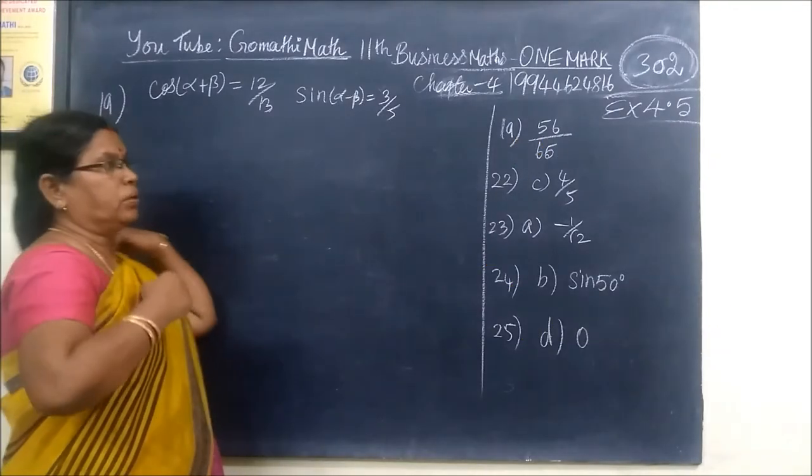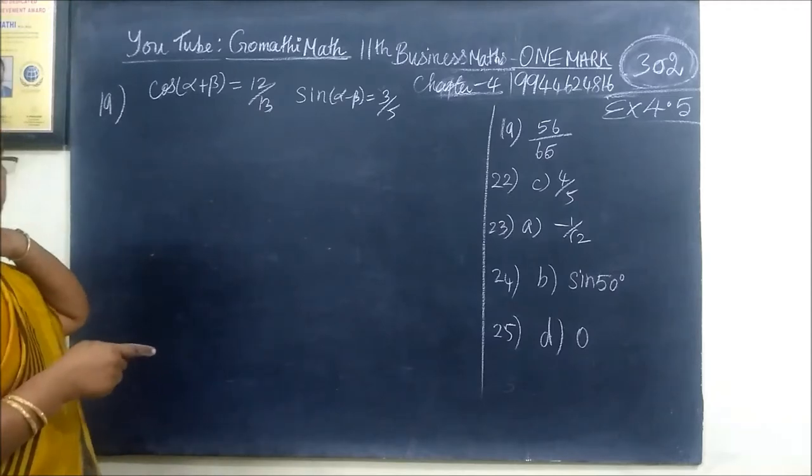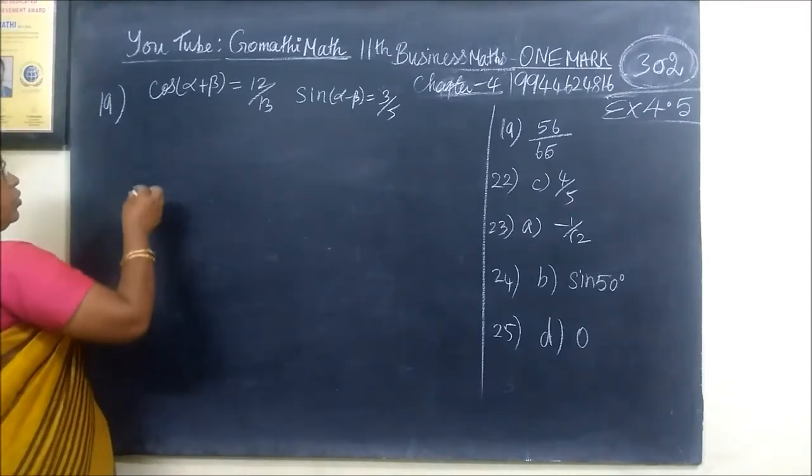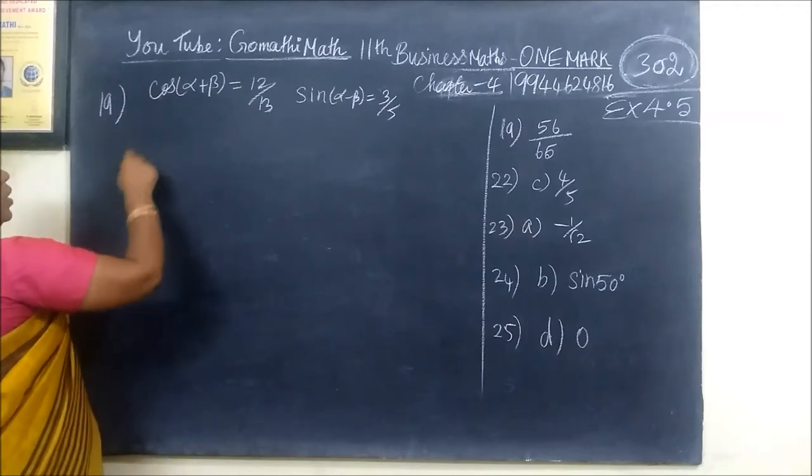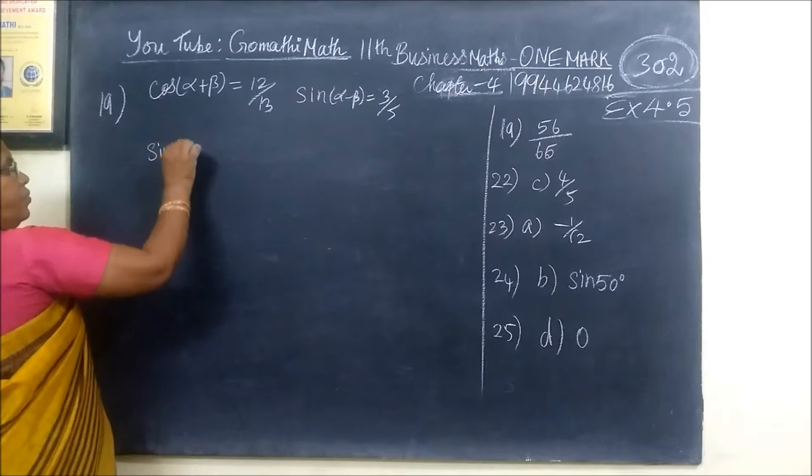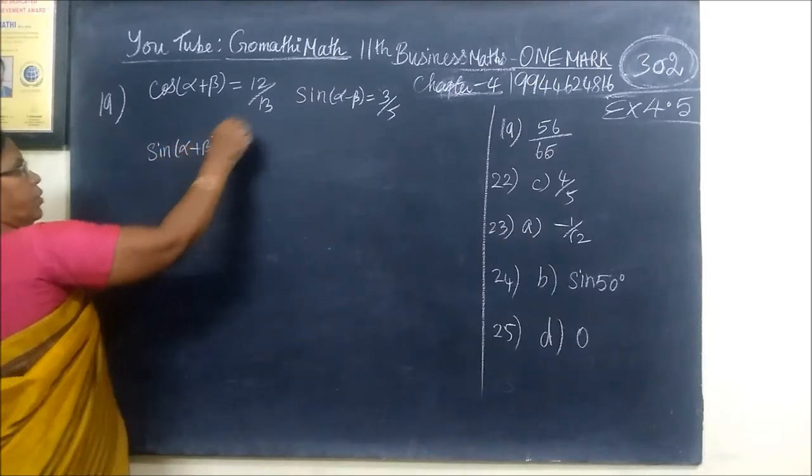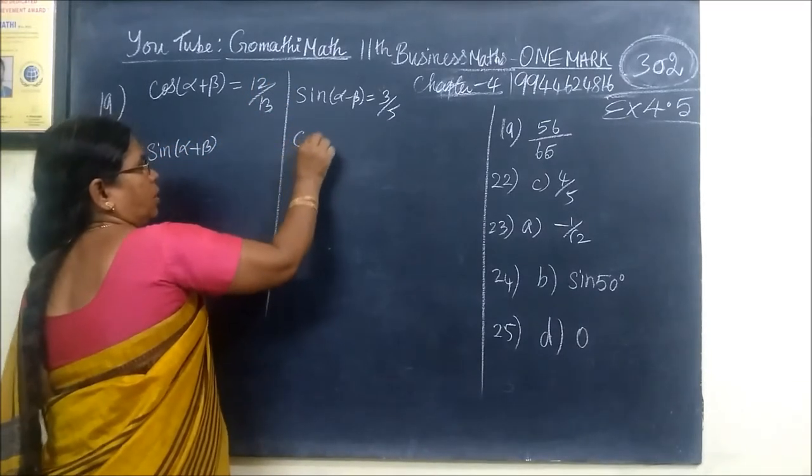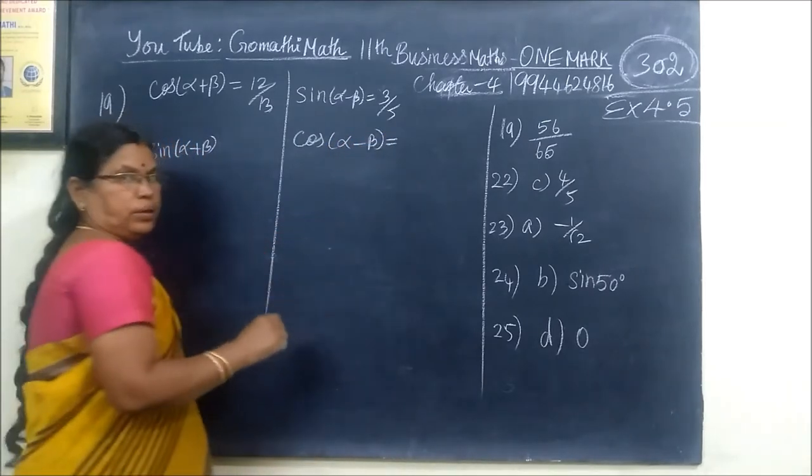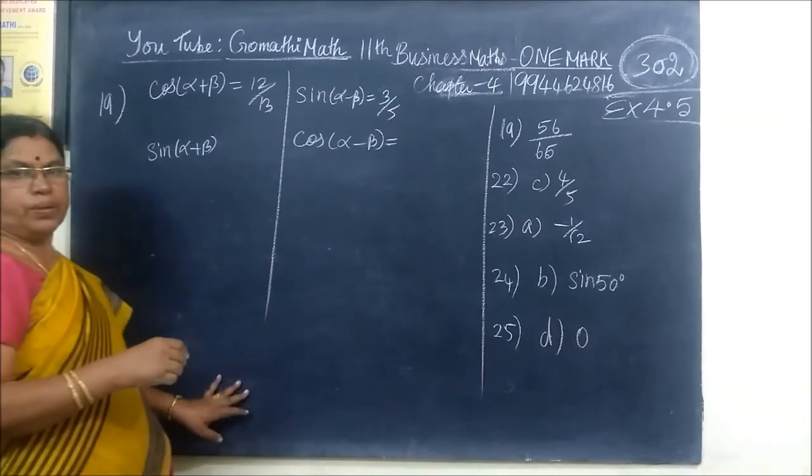This is question number 90 to 25, 19 is a report. This is a plus b. Now, cos of a plus b. Now, sin of alpha plus beta. This is cos of alpha minus beta. You want to find cos of a plus b. Sin of a plus b plus cos a plus b.